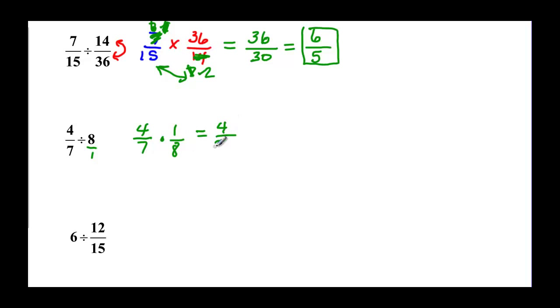7 times 8 is going to be 56, and 4 does go into 56 because we could have reduced here with the 4 and the 8. So 4 times 1 would be 4 and 4 times 14 would be 56, so we have 1 over 14 to reduce it.